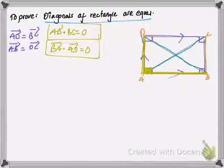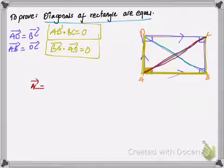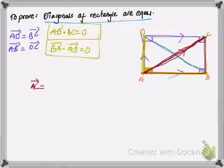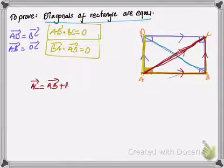Now we should use the triangle law of vector addition. Taking diagonal AC: moving from point A to C is the same as moving from point A to B and then B to C. So vector AC is equal to vector AB plus vector BC. This follows from the triangle law of vector addition.